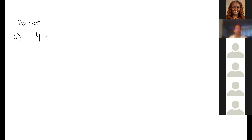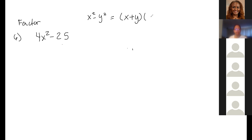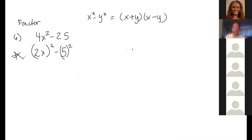Number 6: 4x² minus 25. Remember the pattern x² minus y². This is (2x)² minus 5². You can factor this as the quantity 2x plus 5 times the quantity 2x minus 5.